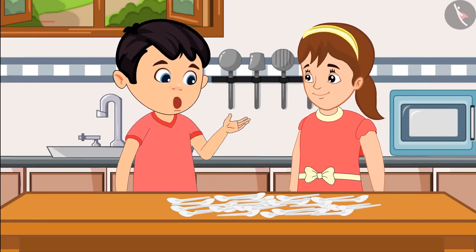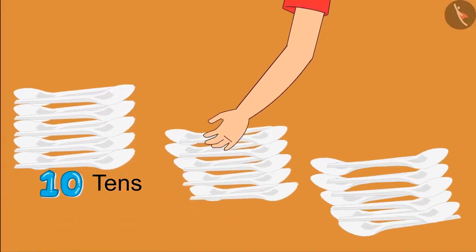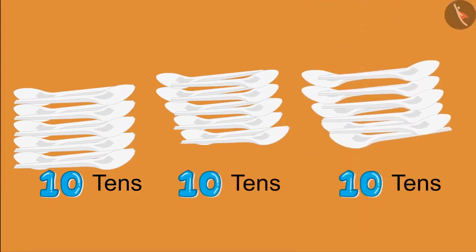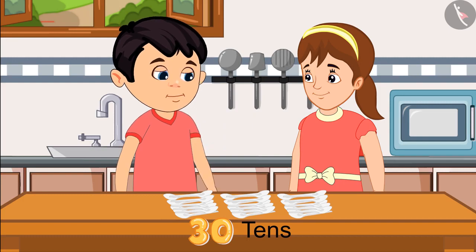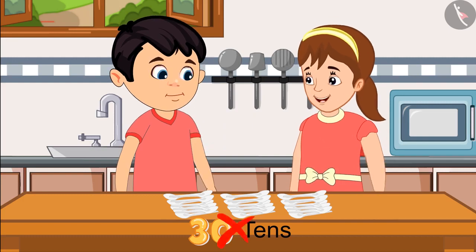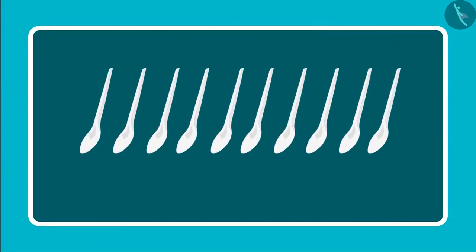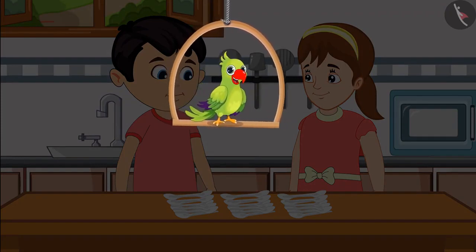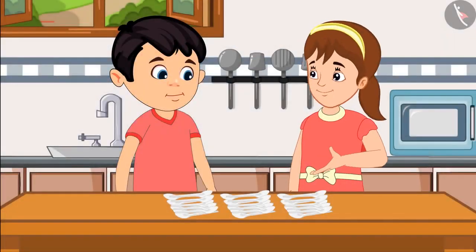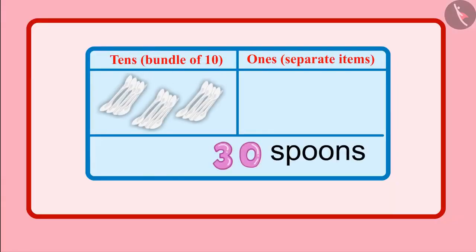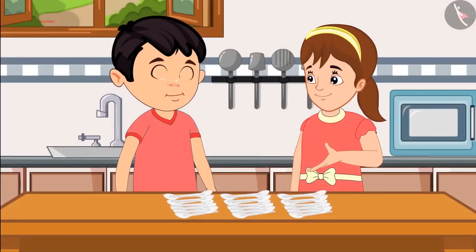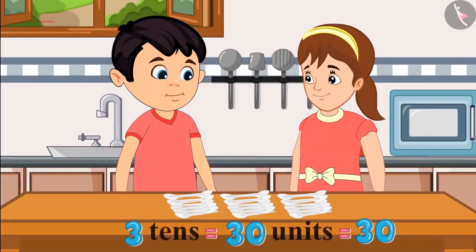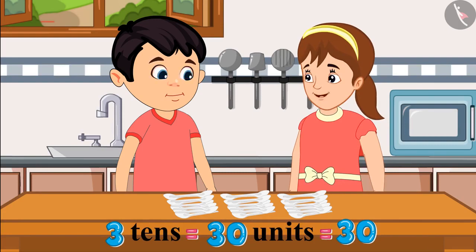Yes, you are right. Let us do this. 10 tens, 10 tens, and another 10 tens. So this is a total of 30 tens. Hey, Chotu, you are counting it wrong. A group of 10 means one 10. Children, do you think that Chotu has bought 30 sets of 10 spoons? Chotu, these are just 30 spoons. 30 does not mean 30 tens, but 30 units. 30 tens would be too many spoons.